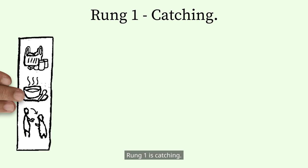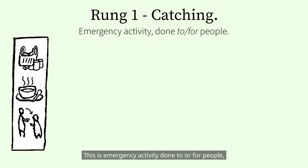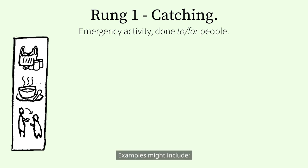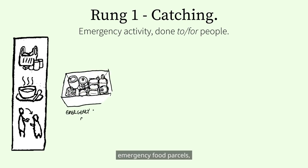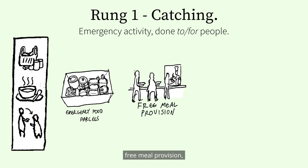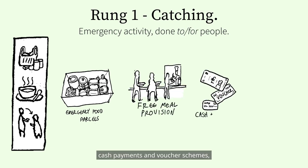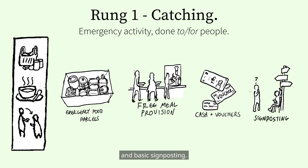Rung 1 is Catching. This is emergency activity done to or for people in crisis situations where people can't access the resources they need. Examples might include emergency food parcels, free meal provision, cash payments and voucher schemes, and basic signposting.